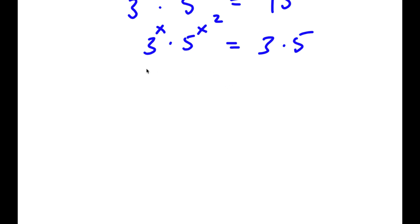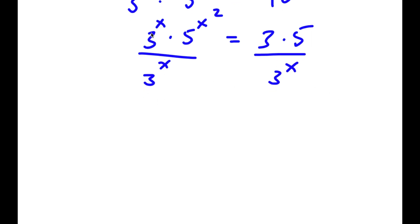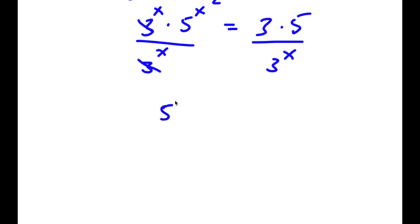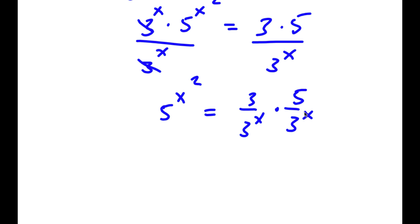Now I'm going to go ahead and divide both sides by 3 to the power of x. These two would cancel out and I would have 5 to the power of x squared is equal to 3 over 3 to the power of x times 5 over 3 to the power of x.